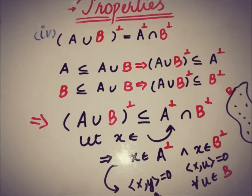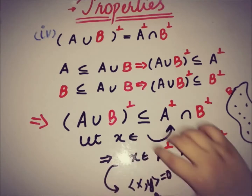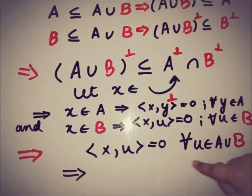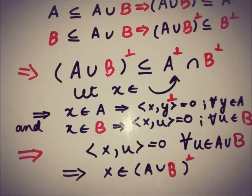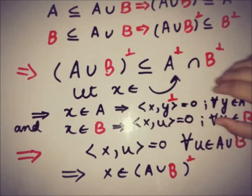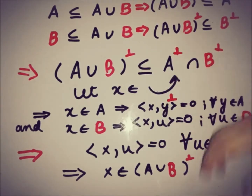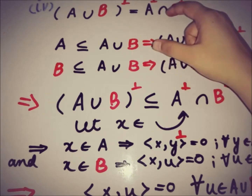Since A ⊆ A ∪ B and B ⊆ A ∪ B, we can apply the definition to A ∪ B as well. So the inner product of X and U where U is taken from A ∪ B is 0. This implies that X belongs to (A ∪ B) annihilator. Therefore, A annihilator ∩ B annihilator ⊆ (A ∪ B) annihilator.